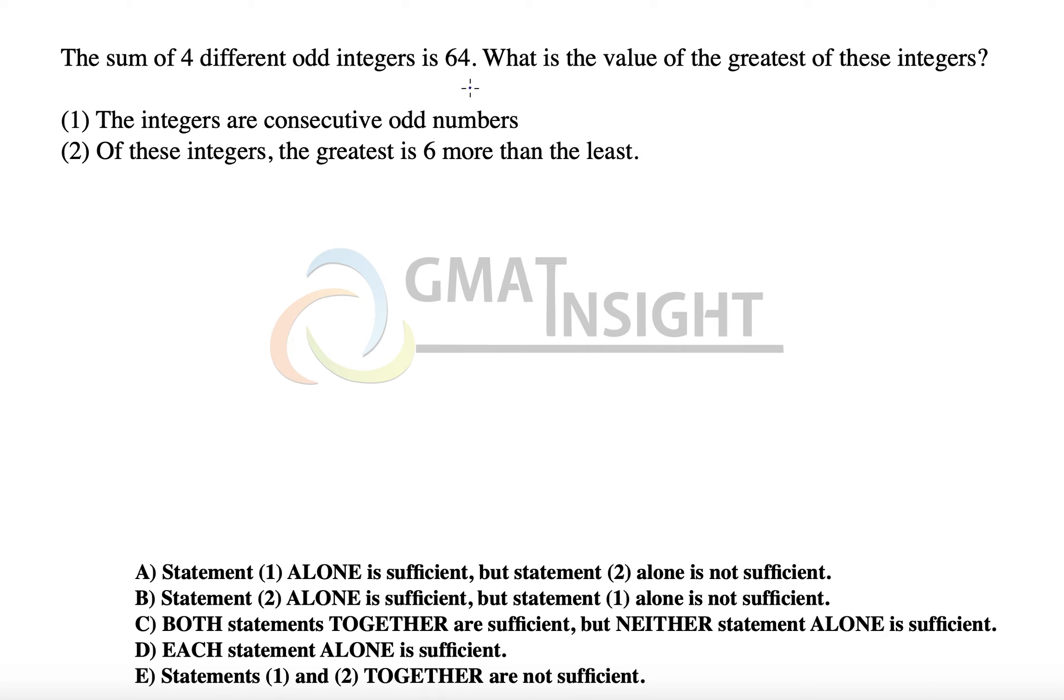The sum of four different odd integers is 64. What is the value of the greatest of these integers?